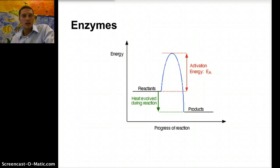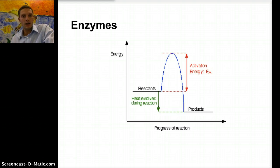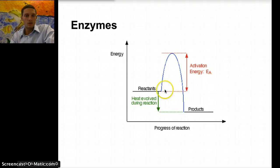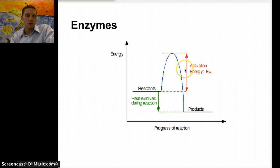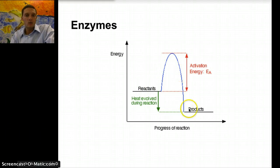An enzyme is a small molecule that basically helps to speed up reactions inside of an organism or inside your body. For a reaction to occur, it requires a certain amount of energy — that's called our activation energy. In order for this reaction to progress or to occur, a certain degree of energy is required. So we have some reactants, and after activation energy is provided, we get some products.